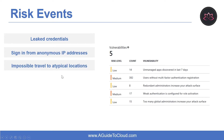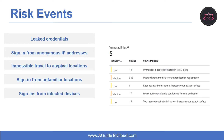The third type is impossible travel to atypical locations — this identifies two sign-ins originating from geographically distant locations where at least one may be atypical for the user given past behavior. Another risk type is sign-in from unfamiliar locations, which considers past sign-in location such as IP address, latitude, longitude, and ASN to determine new or unfamiliar locations. Next is sign-in from infected devices, identifying sign-ins from devices infected with malware known to actively communicate with a bot server. The last risk type is sign-in from IP addresses with suspicious activity, identifying IP addresses from which a high number of failed sign-in attempts were seen across multiple user accounts over a short period of time.